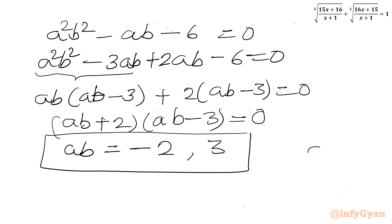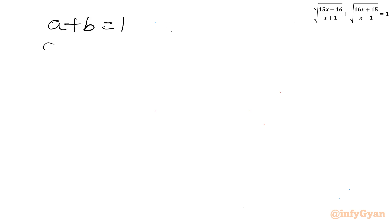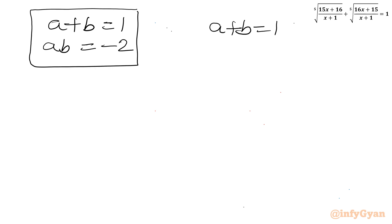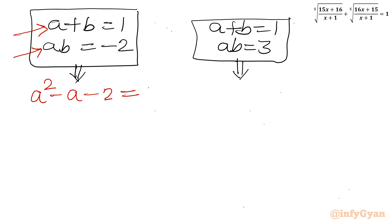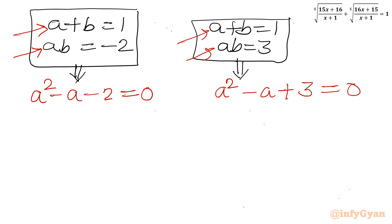For each system, a and b are roots of a quadratic. System 1: a + b = 1, ab = −2 gives a² − a − 2 = 0, which factors as (a − 2)(a + 1) = 0, so a = 2 or a = −1. System 2: a + b = 1, ab = 3 gives a² − a + 3 = 0, whose discriminant is 1 − 12 = −11, which is negative.